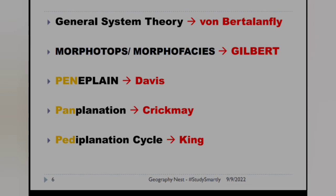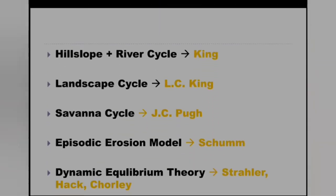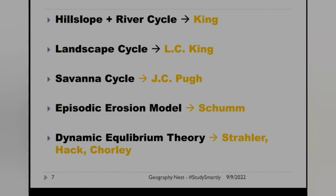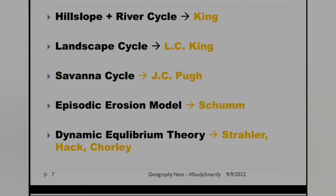Peneplain — Davis. Pan plane — Crickmay. Pediplain — King. Hill slope cycle was given by King, river cycle was given by King, landscape cycle was given by L.C. King. Savanna cycle — J.C. Pugh. Episodic erosion model — Schumm. Dynamic equilibrium theory — Stoller, Hack and Chorley.